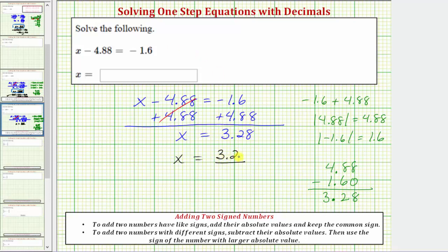Before we go though, let's check our solution by substituting 3.28 for x in the original equation to make sure it satisfies the equation. Performing the substitution, we would have 3.28 minus 4.88 equals negative 1.6.